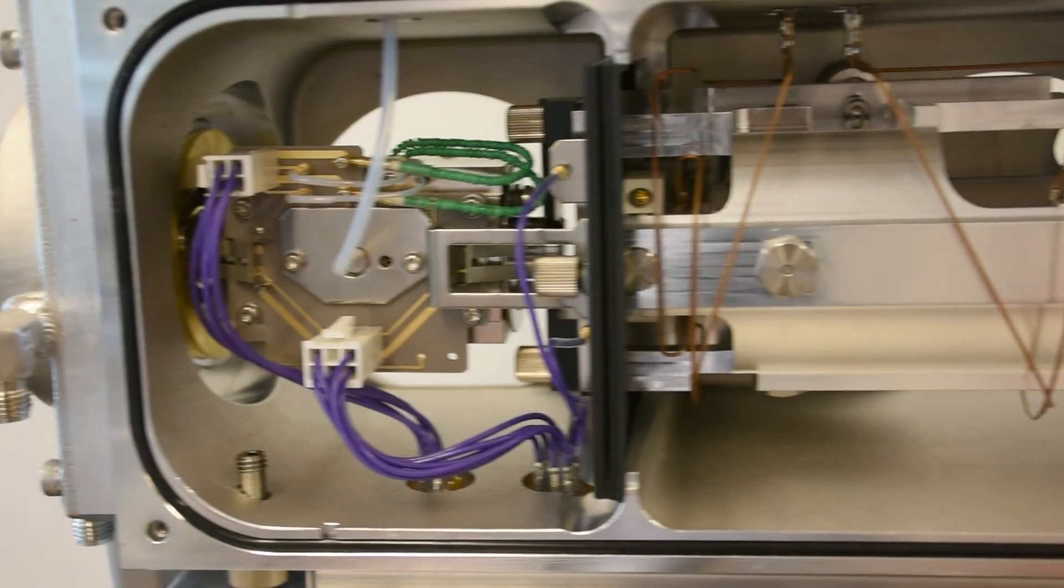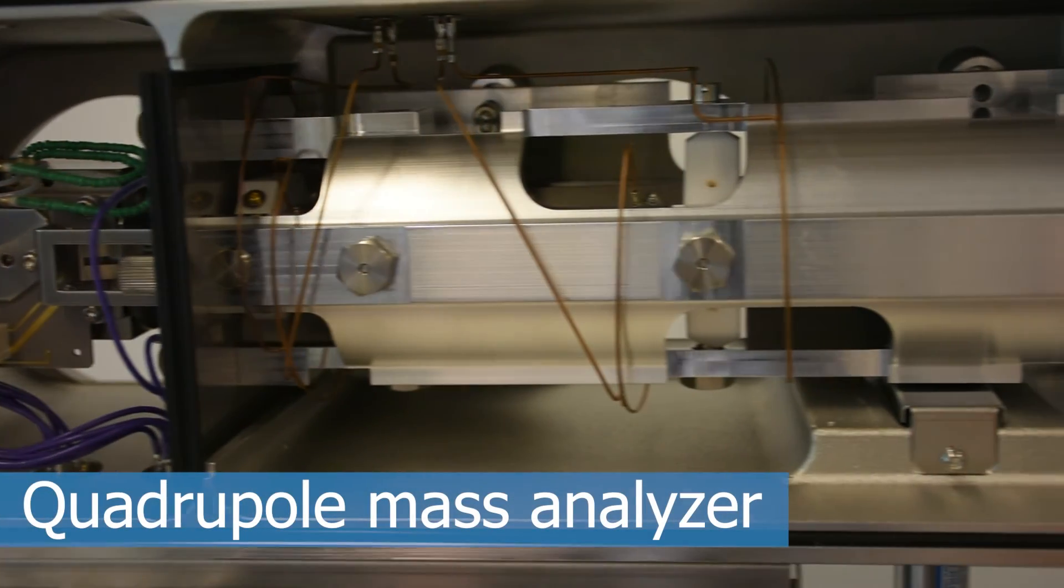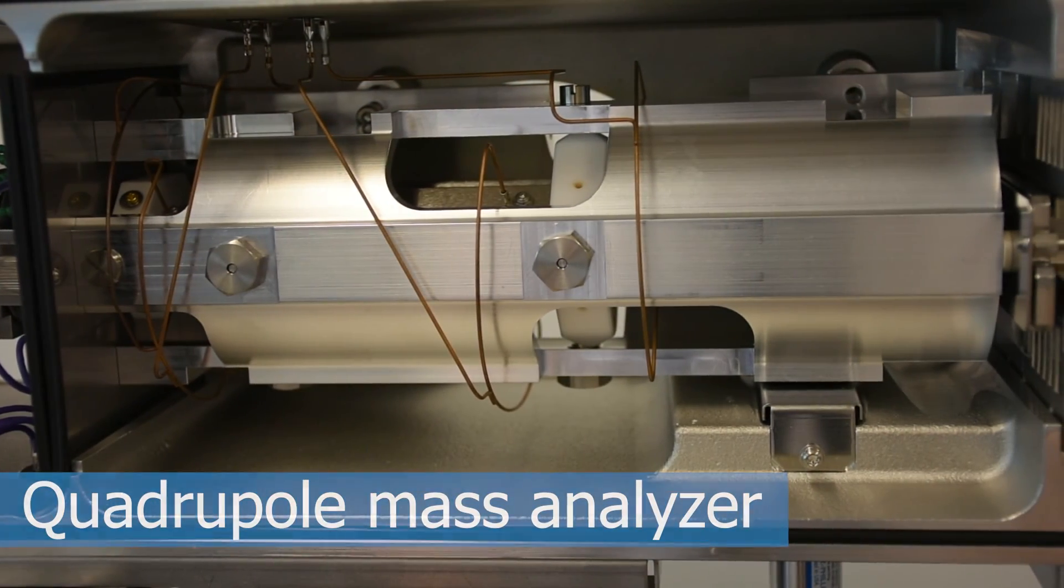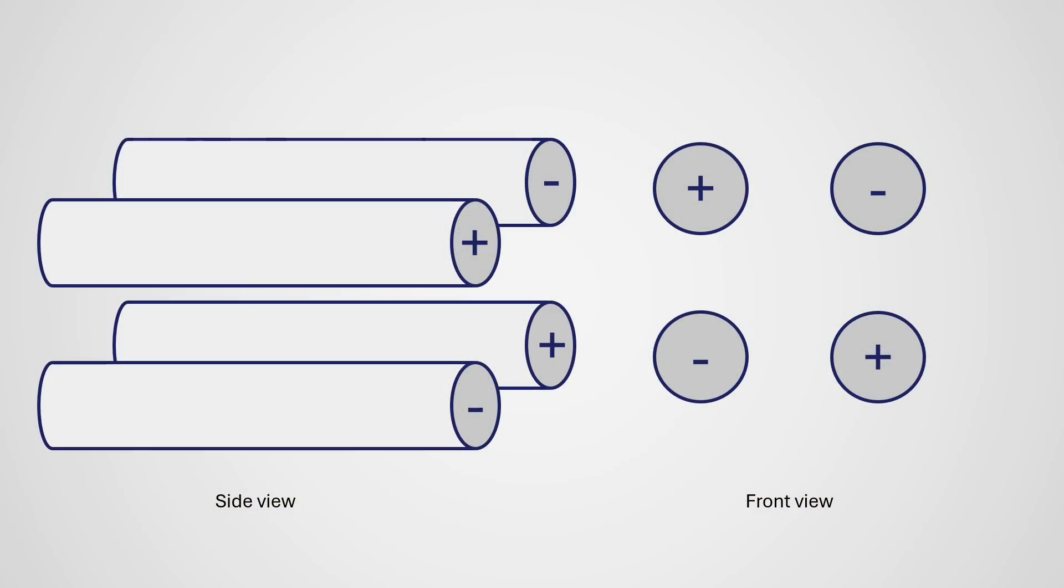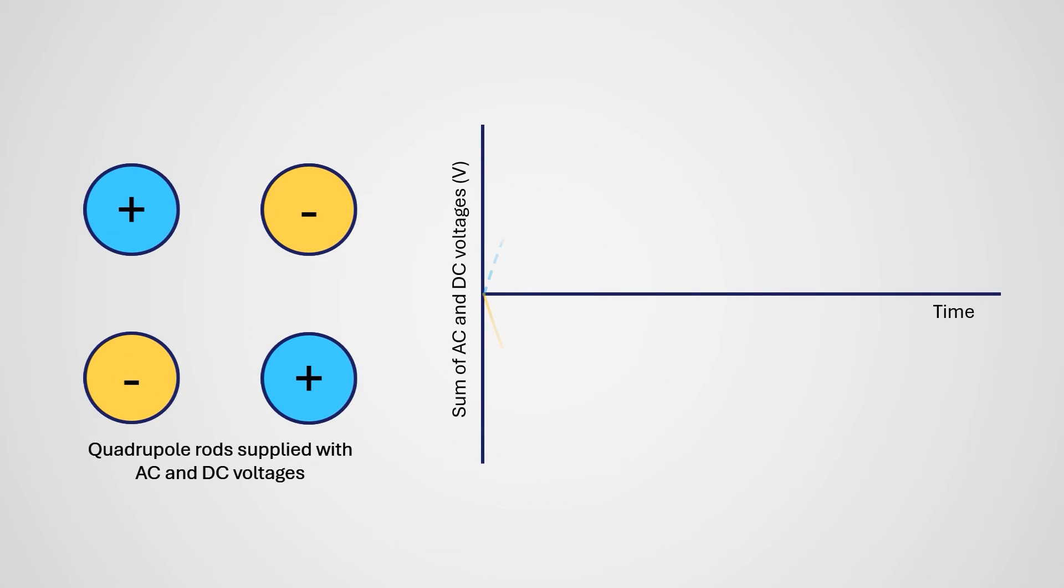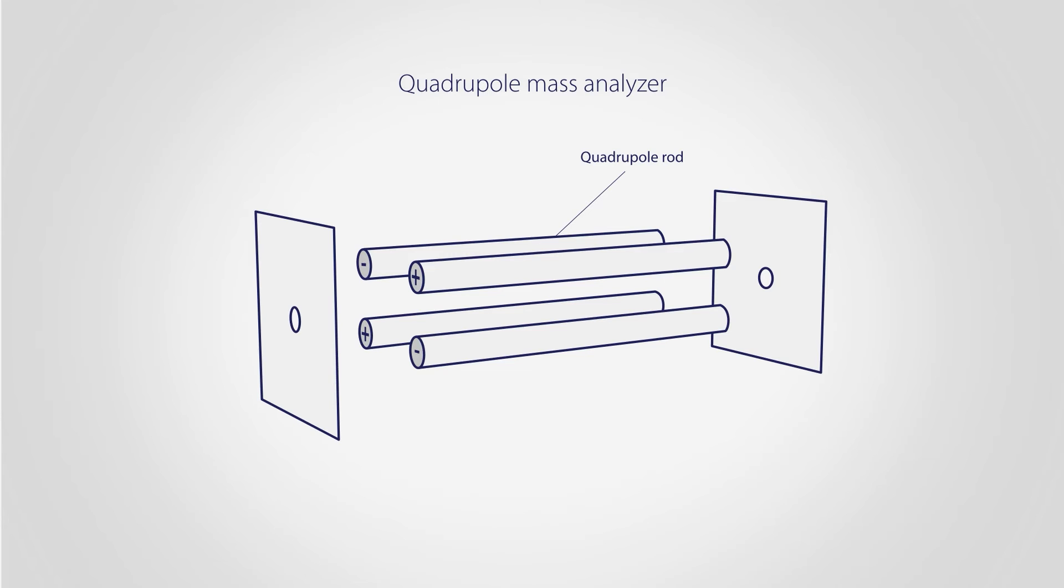The ions proceed to the quadrupole mass analyzer. It filters ions by their mass to charge ratio. The quadrupole consists of four parallel rods, each with both AC and DC voltages on them. The details get complicated, but basically pairs of rods have opposing polarity, and that positive negative polarity switches back and forth rapidly. All of that generates an oscillating electric field down the center line of the quadrupole.